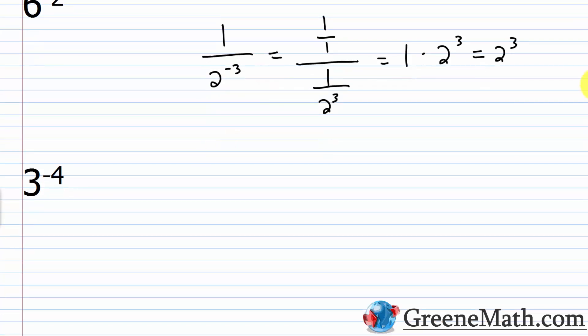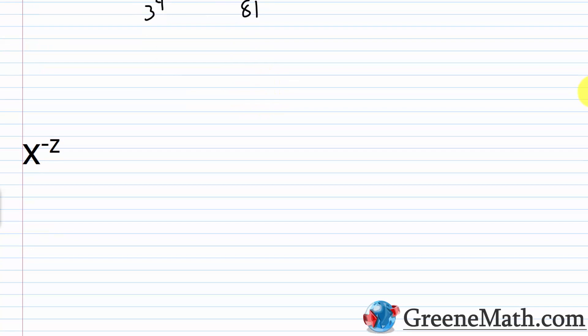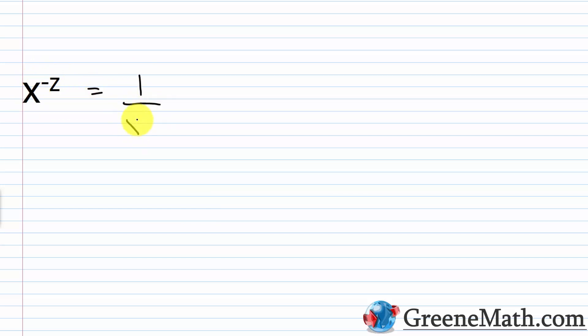Let's look at another one: three to the power of negative four. Take the reciprocal of the base — one over three — and change the sign of negative four to positive four, giving one over three to the fourth power, or one over 81. Suppose we had x to the power of negative z — how do we write this without a negative exponent? Take the reciprocal of the base, so one over x, raised to the power of positive z. This gives one over x to the power of z.